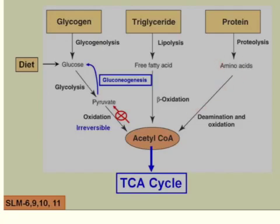Amino acids can also be directly converted into pyruvate — some amino acids. There are 20 amino acids that your body utilizes, and out of those, a handful will be converted to pyruvate when catabolized, and another handful can be converted directly into acetyl-CoA.